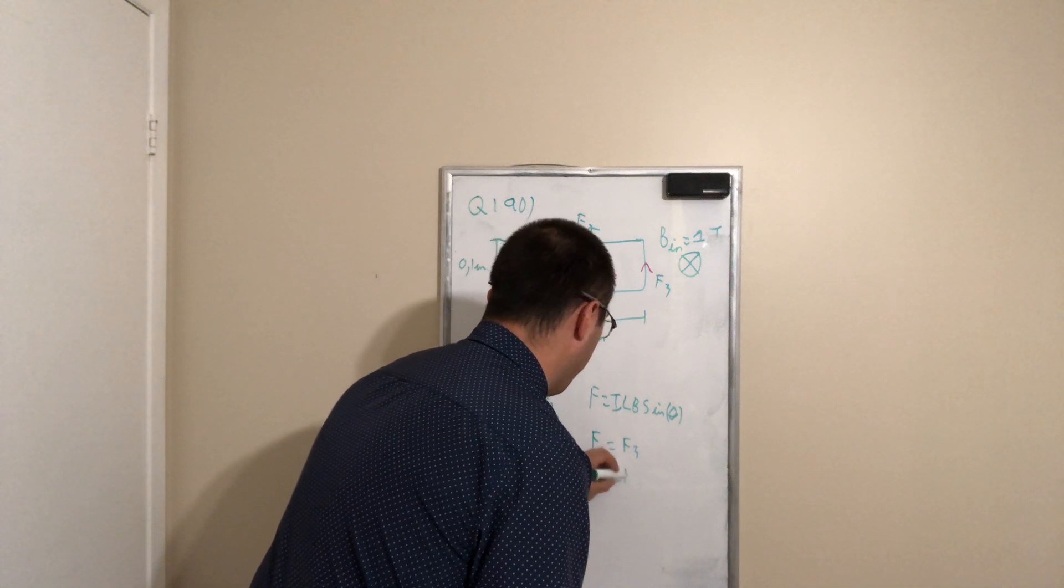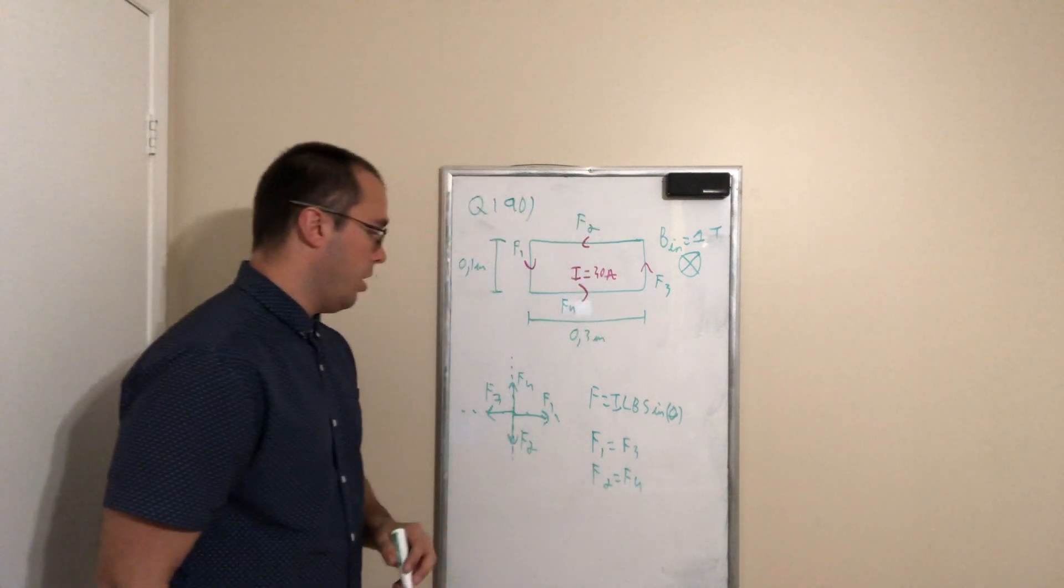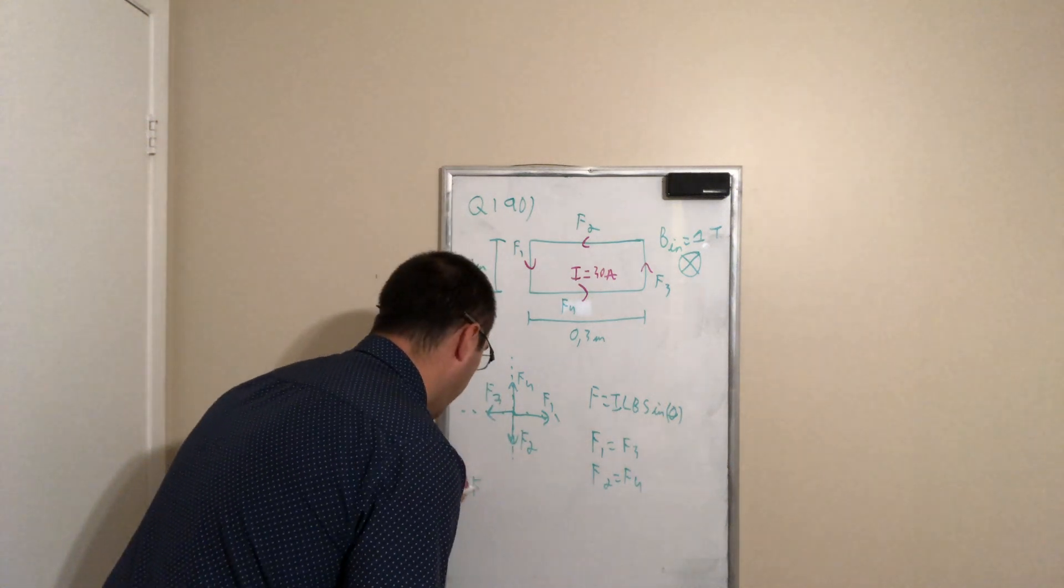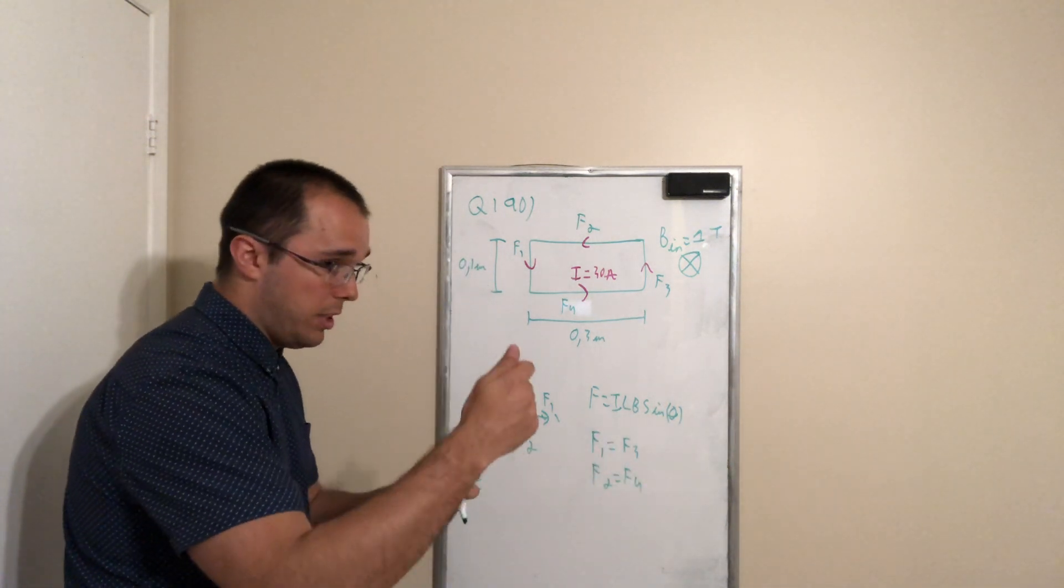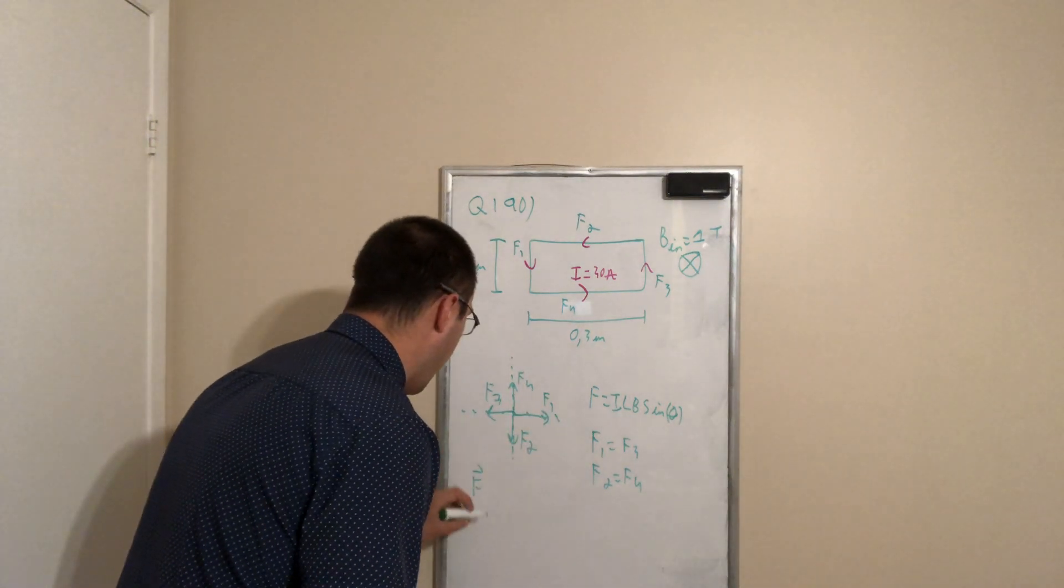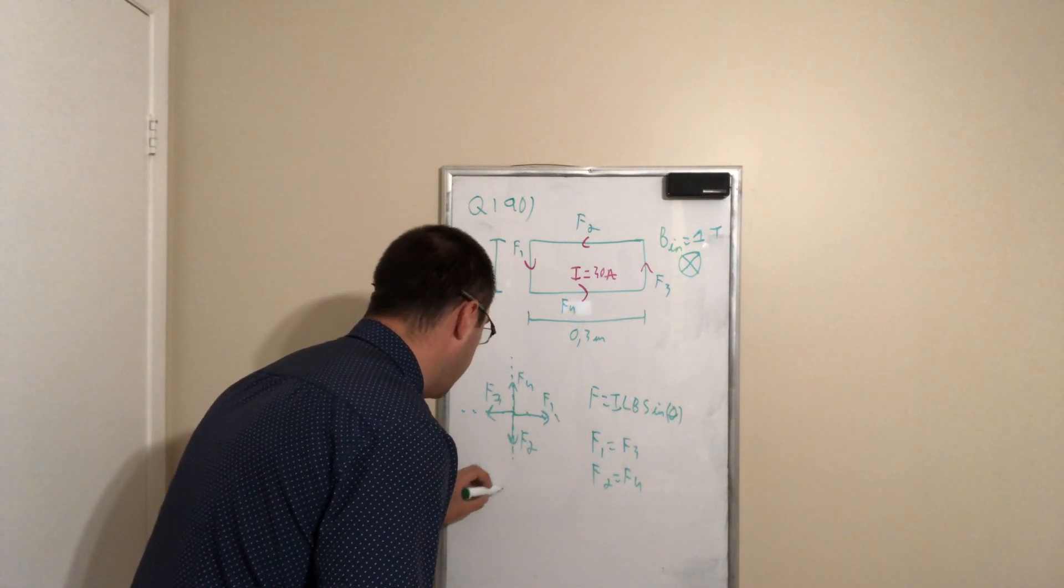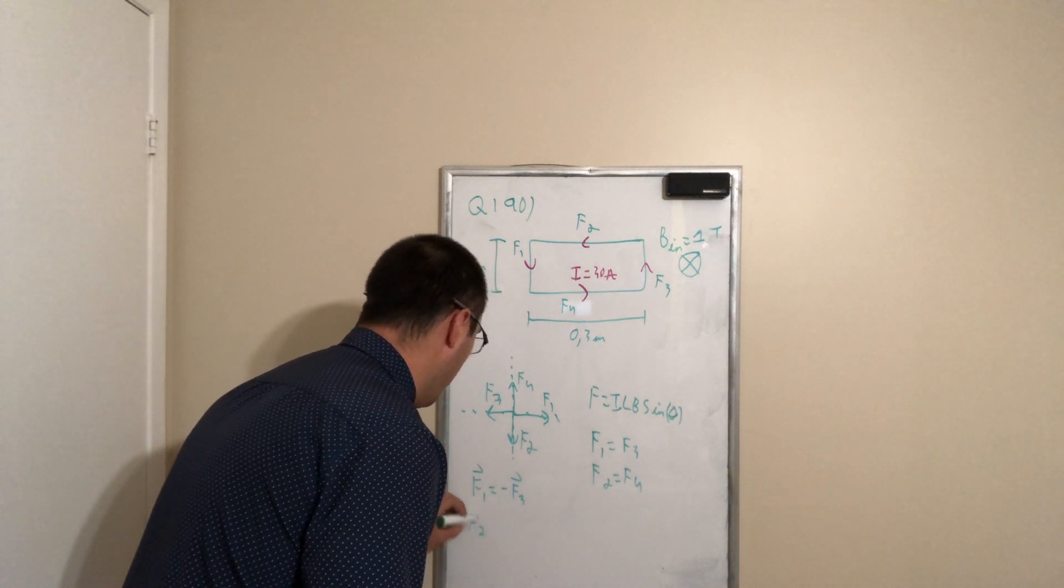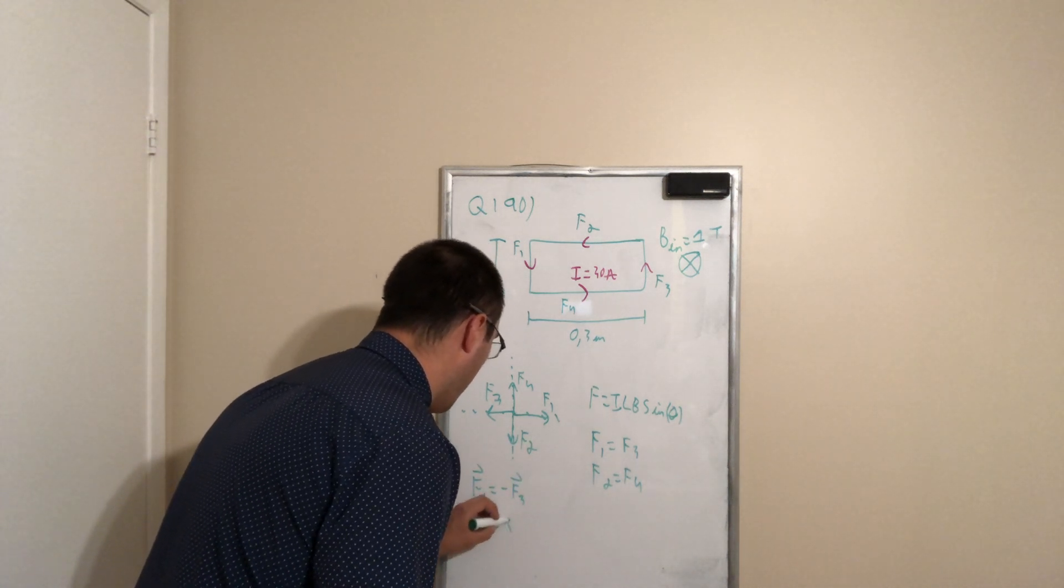F2 and F4 are also equal. If we look on the force diagram and take the complete vector, not only the magnitude but its direction also, we see that F1 is equal to minus F3, and F2 is equal to minus F4.